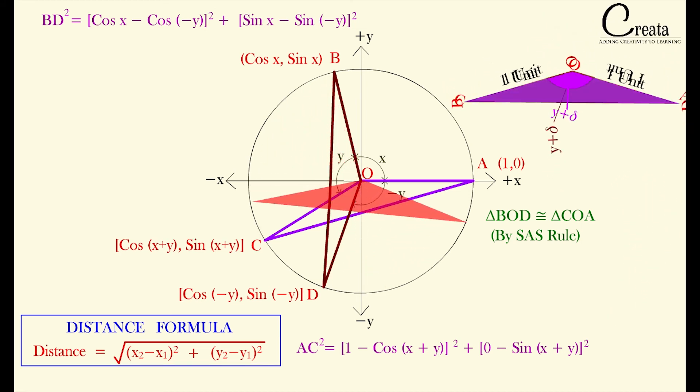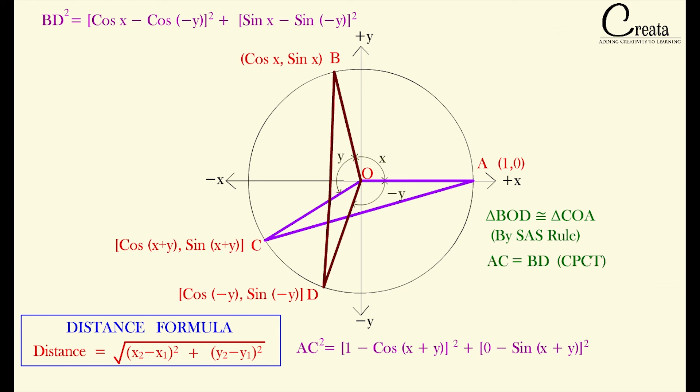It means that corresponding sides of the triangle must be equal. That is CPCT, corresponding parts of congruent triangle are equal to each other. If both of these triangles are congruent, then their corresponding sides as well as their corresponding angles will be equal to each other. So the third sides that is AC and BD will be equal to each other. We have proved that both the triangles are congruent triangles, so its corresponding sides will be equal.